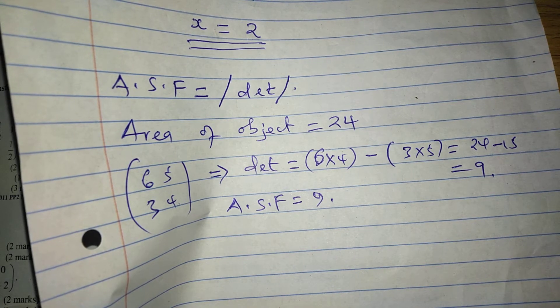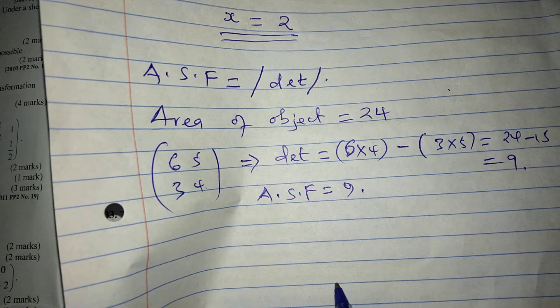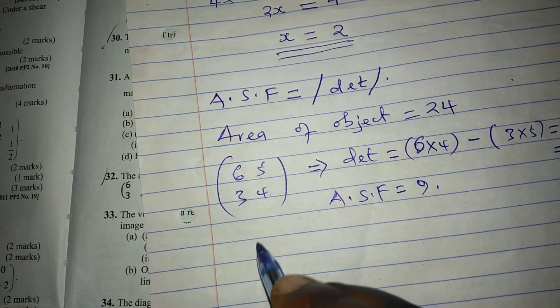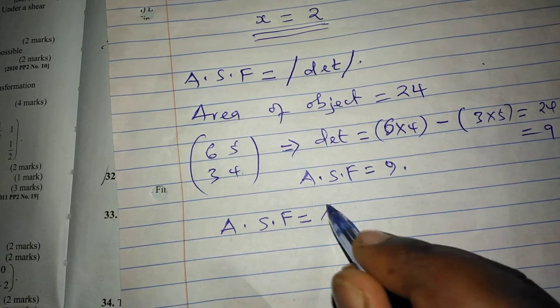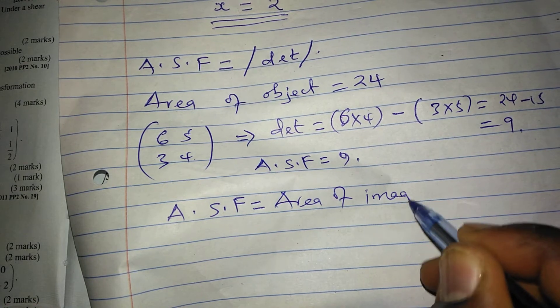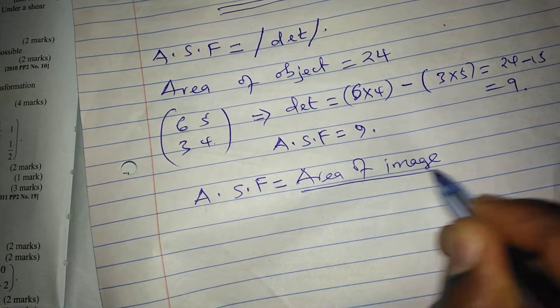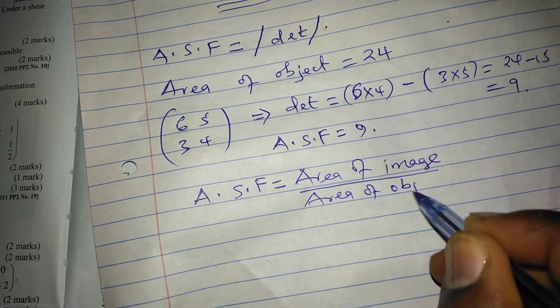Now that we have area scale factor and we have area of object, then we can get to our relationship, which says that area scale factor is given by area of image divided by area of object.